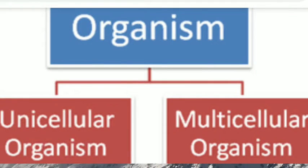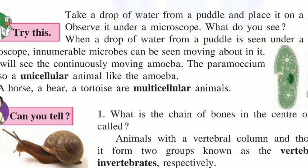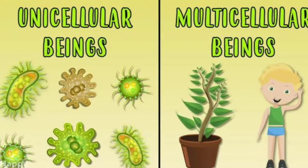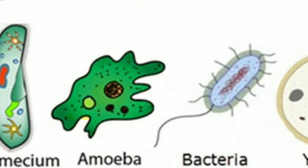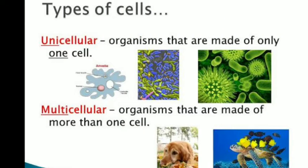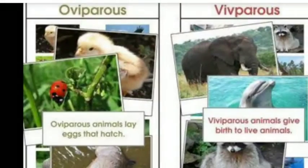Let us move towards the first classification: unicellular organisms and multicellular organisms. Students, take a drop of water from a puddle and place it on a glass slide. Observe it under a microscope. When a drop of water from a puddle is seen under a microscope, innumerable microbes can be seen moving about in it. You will see the continuously moving amoeba. The paramecium is also a unicellular animal like the amoeba. A horse, a bear, and a tortoise are multicellular animals, whereas paramecium, amoeba, and euglena are unicellular. Unicellular organisms made up of only one cell are called unicellular animals, whereas organisms made up of more than one cell are called multicellular animals.